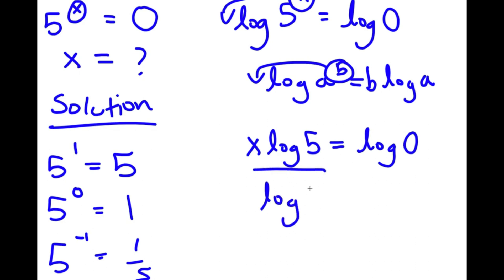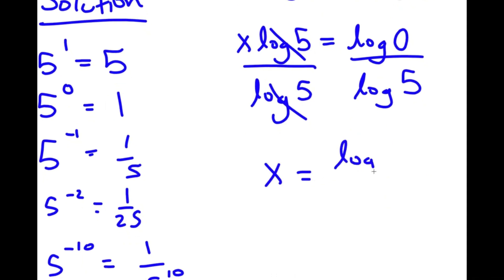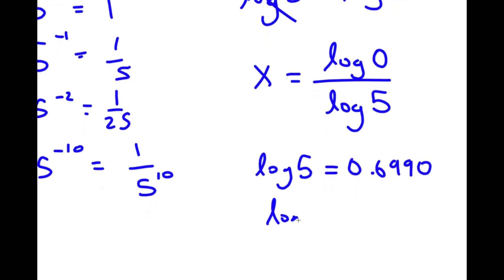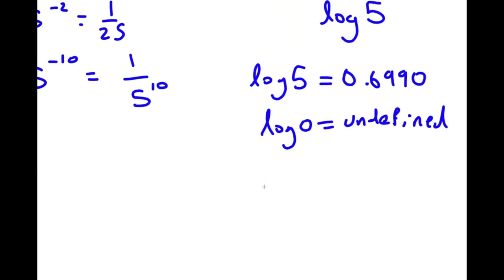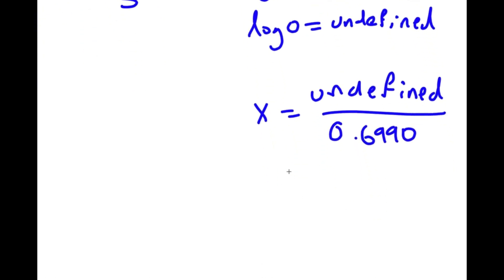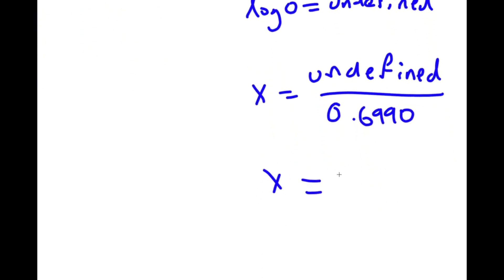If I divide both sides by log(5), these two cancel out and I get x is equal to log(0) over log(5). Now log(0) is actually undefined, meaning I have x equal to undefined over 0.6990. If something is undefined and you divide it by a number, it's still going to be undefined. So the value of x is undefined.